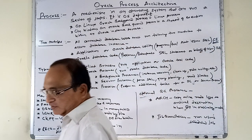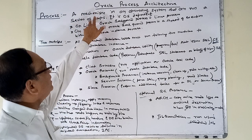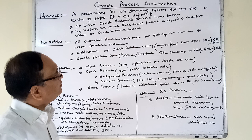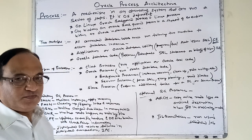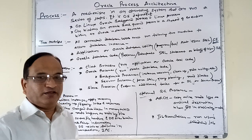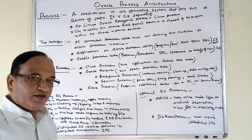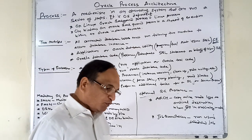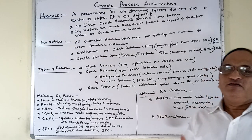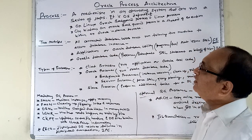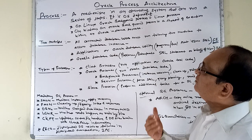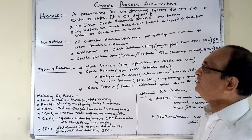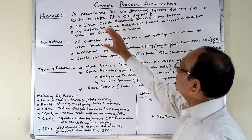A process can be defined as a mechanism in an operating system that can run a series of steps. Any system application when you run over computers, the operating system has to provide support for running that application. Oracle is also a system application — a database system application — and the operating system provides support to carry out the steps required by the database system, which is what we call a process.